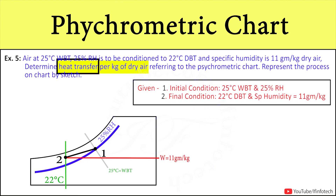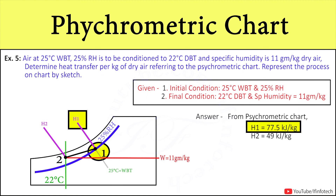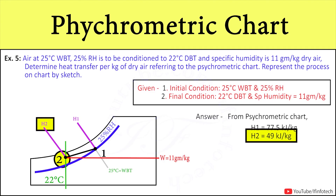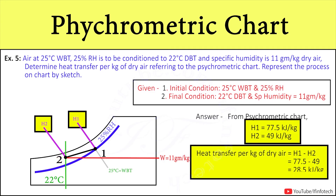In order to calculate change in heat, we need to find out enthalpies at point 1 and point 2. Enthalpy at initial condition, i.e. at point 1, is 77.5 kJ per kg, and at final condition, i.e. at point 2, the enthalpy is 49 kJ per kg. Putting values of H1 and H2, we get the heat transfer per kg of dry air as 28.5 kJ per kg of dry air.